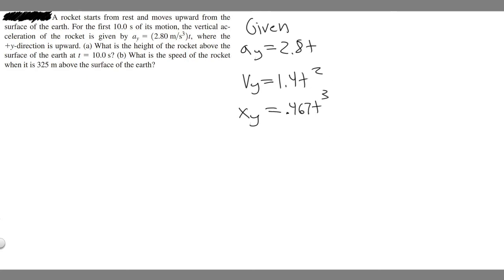So now we have all three of our functions and we're going to use these to solve. So let's go ahead and start with part A. Part A is what is the height of the rocket above the surface at 10 seconds. So height is change in position essentially, change in position from our beginning to end.